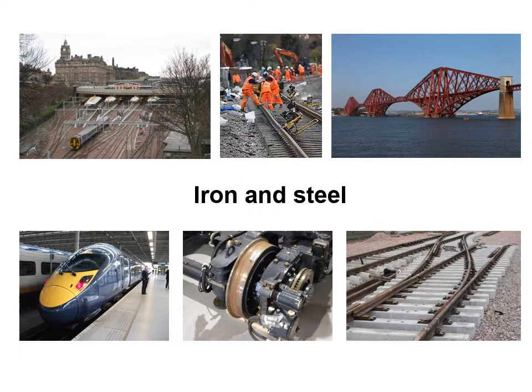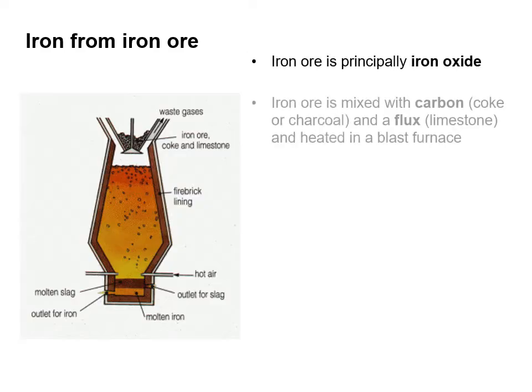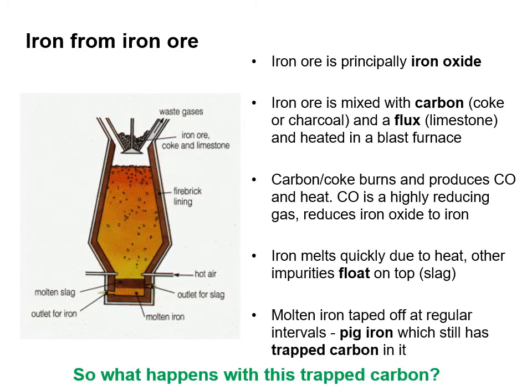We're now going to look at the production of iron and steel for use in the rail sector, with particular attention to the manufacturing of rails. Iron ore is principally iron oxide. The iron ore is mixed with carbon, coke or charcoal and a flux — limestone — and heated in a blast furnace. The carbon and coke burns, producing carbon monoxide and heat. Carbon monoxide is a highly reducing gas, and it reduces iron oxide to iron.